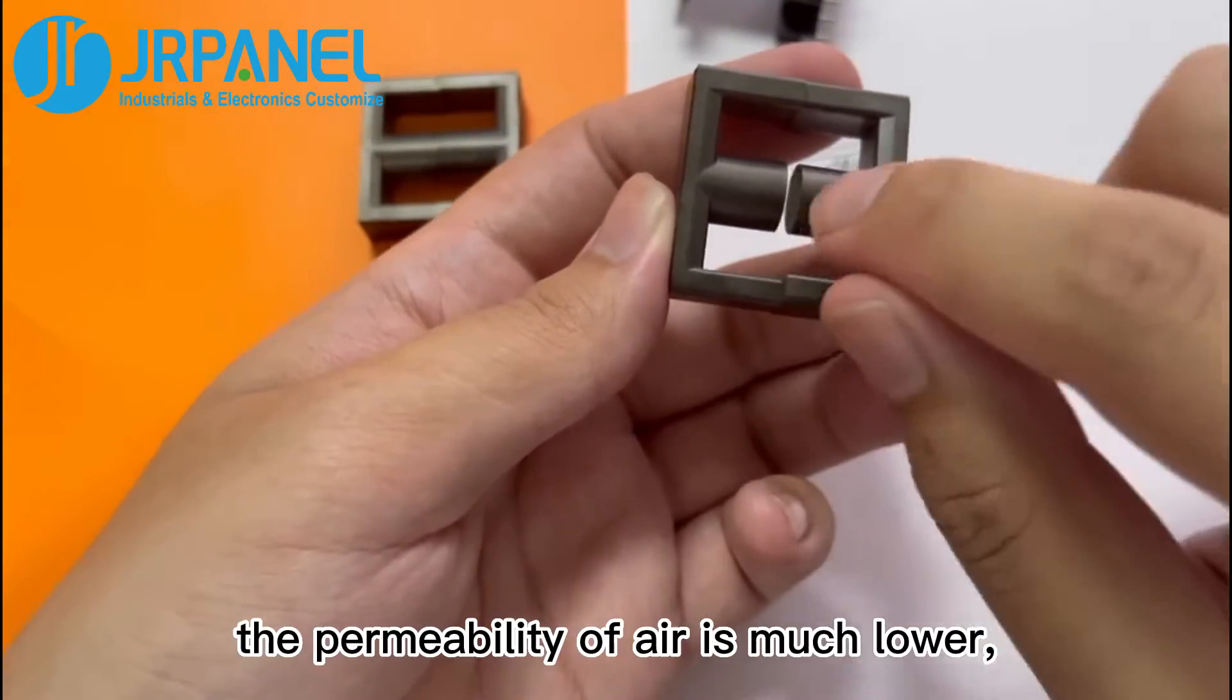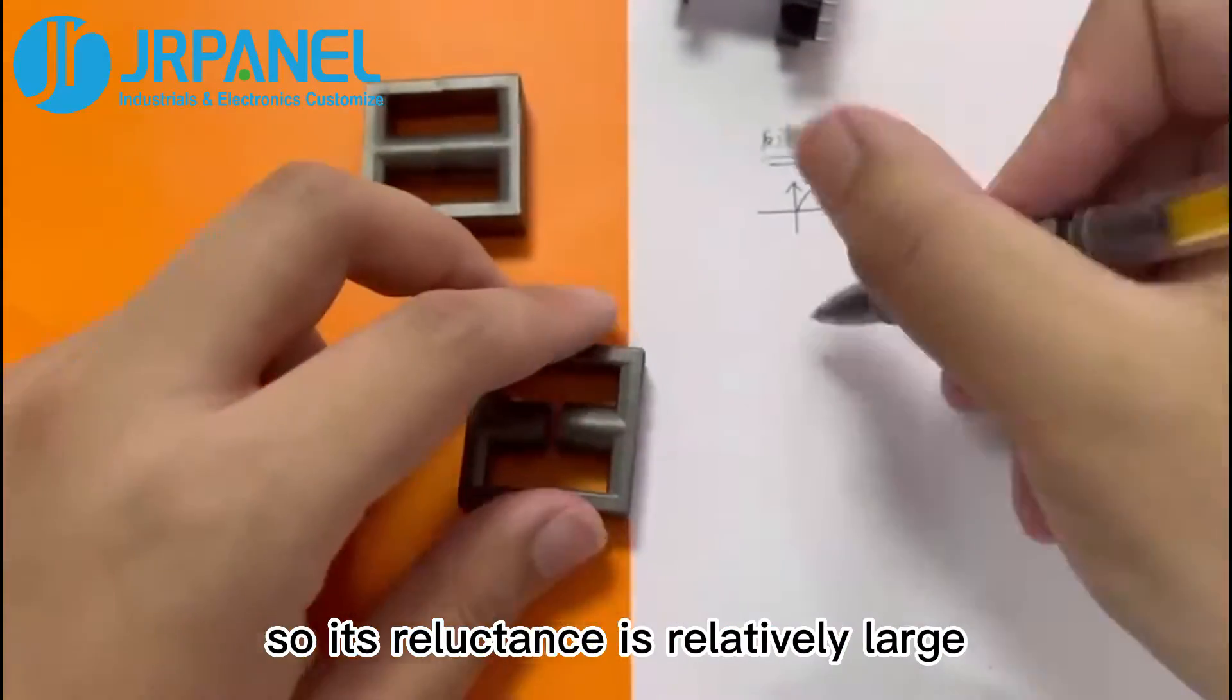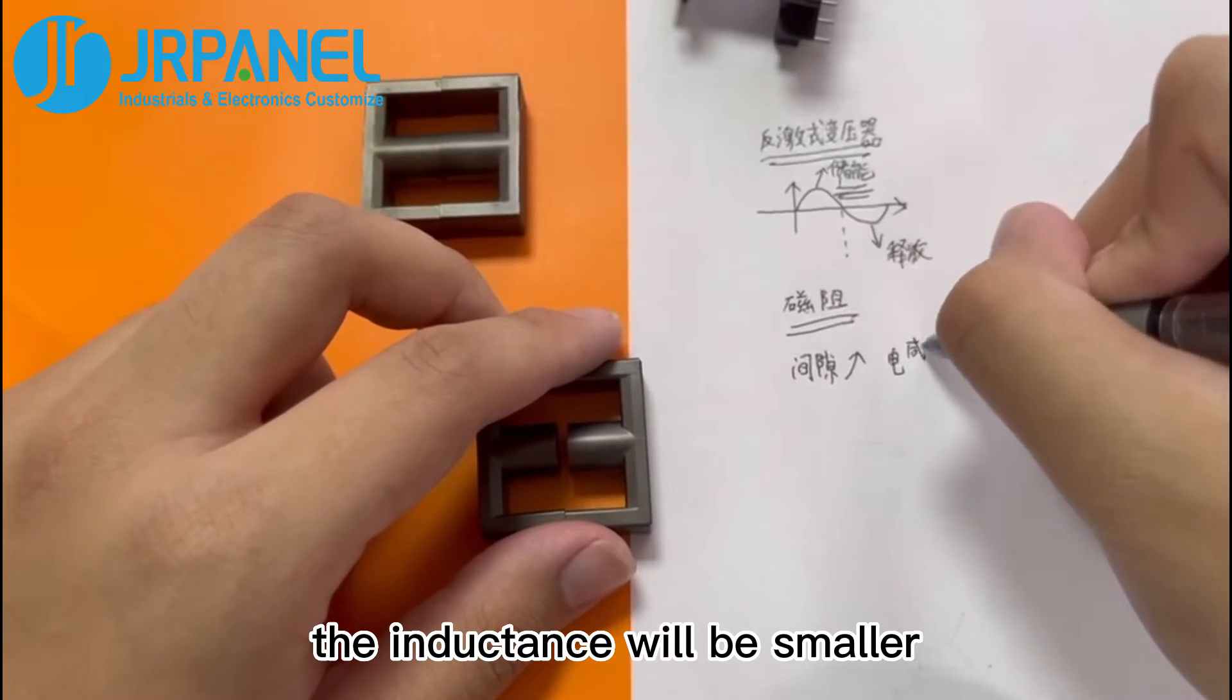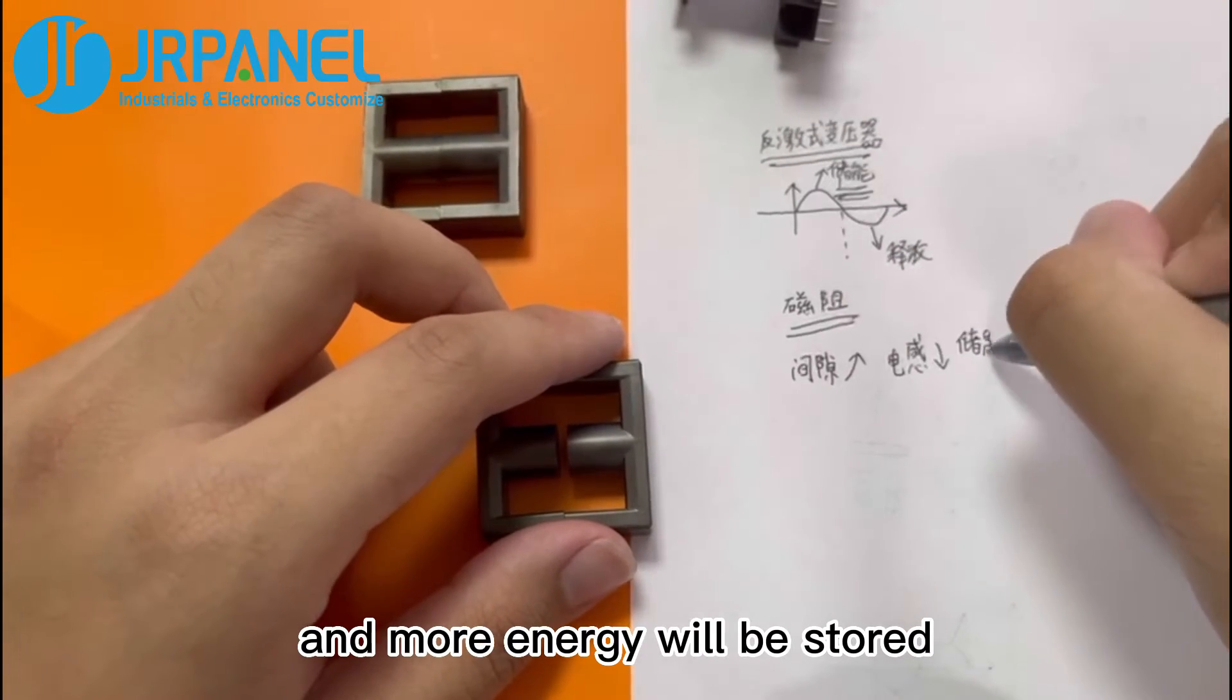Compared with this core, the permeability of air is much lower, so its reluctance is relatively large. When the gap becomes larger, the inductance will be smaller, and more energy will be stored.